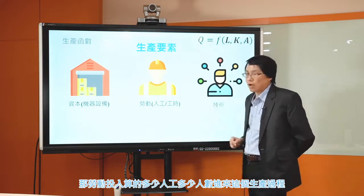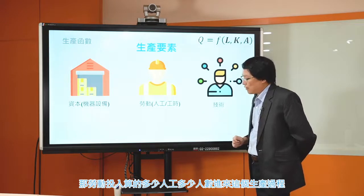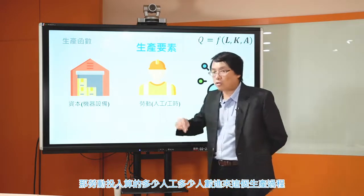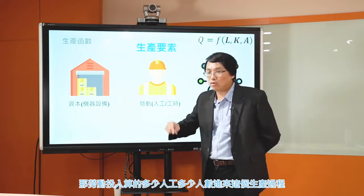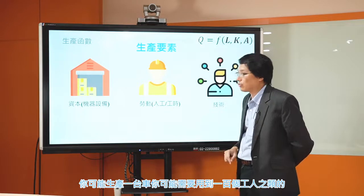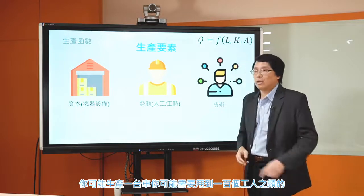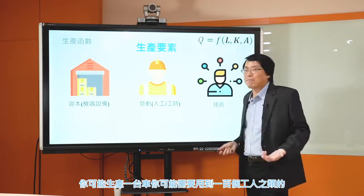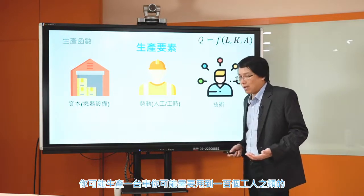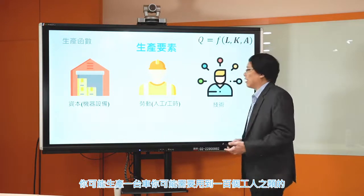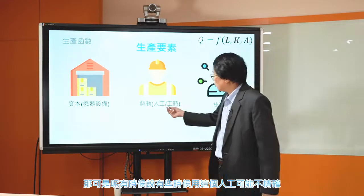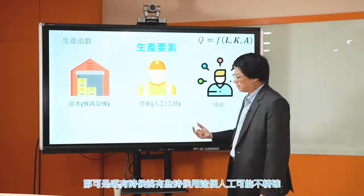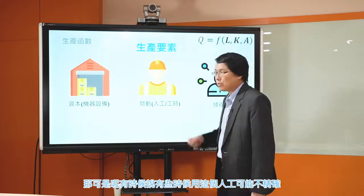所以資本的投入不會等於投資，是投資跟折舊決定你的資本的存量，也就是你所用的所有的機器設備。那第二個我們來看到勞動投入的部分，你要生產一定要有人來做事情，所以要有勞動投入。勞動投入通常可以算有多少人數進來這個生產的過程，你可能生產一台車要用到一百個工人之類的。